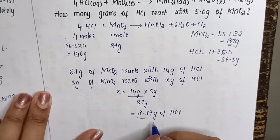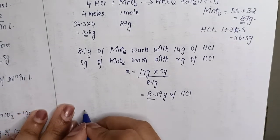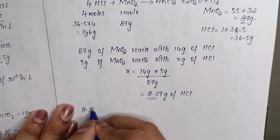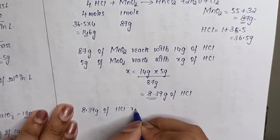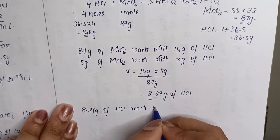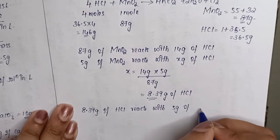Now when we write down the value after calculating, you will have 8.39 grams of HCl. So this is your final answer. Therefore we can write 8.39 grams of HCl reacts with 5 grams of MnO2.